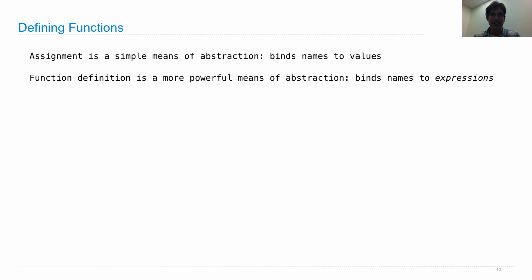Assignment is a simple means of abstraction because you can bind names to values. Abstraction is the process of taking something complex, giving it a name, and treating it as a whole without worrying about all of its details. Function definition is a more powerful means of abstraction because you'll be binding a name not just to a simple value, but to a whole expression, statement, or series of statements.